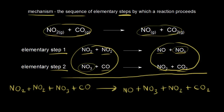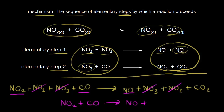Now we look on both sides — on our reactants and our products — and see what we can cross out. We have an NO2 on the left and an NO2 on the right, so we cross that out. We also have an NO3 on the left and an NO3 on the right, so we cross those out. We're left with NO2 plus CO on the reactants side, and nitric oxide NO plus carbon dioxide CO2 on the products side.